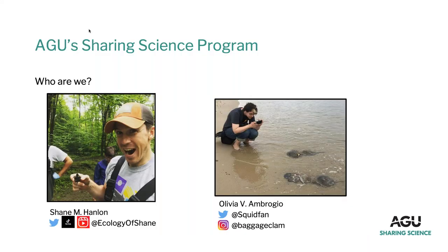Briefly about who's talking to you: my name is Shane, I'm an ecologist by training with a background in biology. I came to science communication and storytelling through science policy — I wanted to know what happened to research. Outside of my work at AGU teaching scientists to communicate more effectively, I'm also a storyteller here in the DC region, telling stories at different shows and through different organizations.